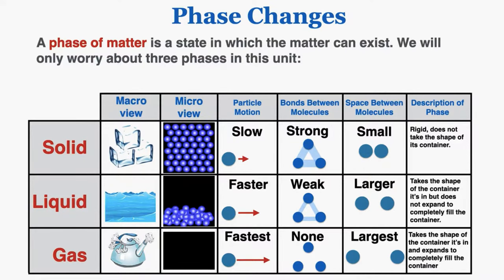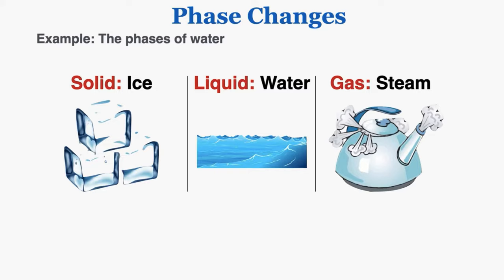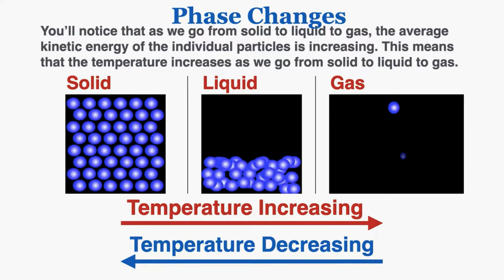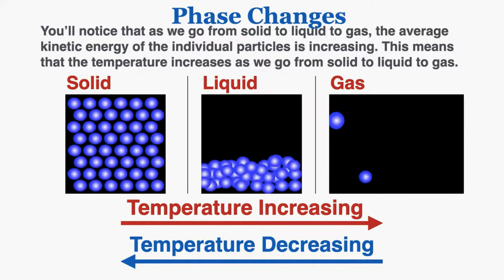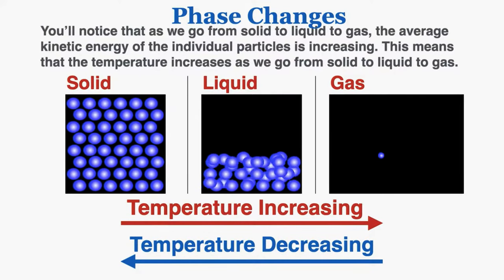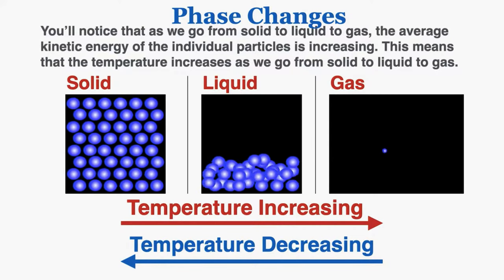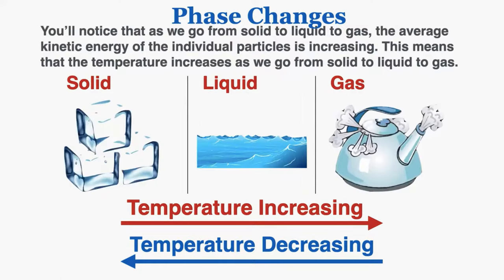The space between the particles gets larger as we go, and there are certain noticeable properties of solids, liquids, and gases that can help us identify which is which. For example, these are the phases of water: its solid phase is ice, its liquid phase is water, and its gas phase is steam. As we go from solid to liquid to gas, the average kinetic energy of the individual particles increases, meaning temperature increases as well, because temperature is literally just a measurement of average kinetic energy. This fits our intuition — we normally associate liquid water as being warmer than ice, and steam as being warmer than liquid water.